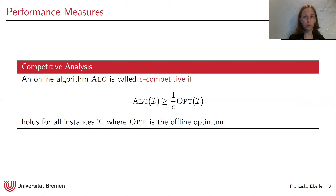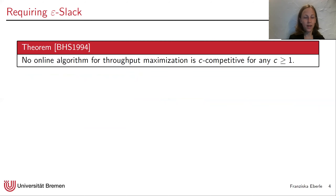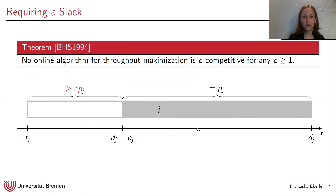Unfortunately, in general we cannot solve the problem online at all, because from a result by Barua and others, we know there is no online algorithm that is C-competitive for any C ≥ 1. That is why we assume each job in the system has a lag — the interval of the job is at least 1+ε times its processing time. Given all that, let's define what commitment issues mean in this problem.